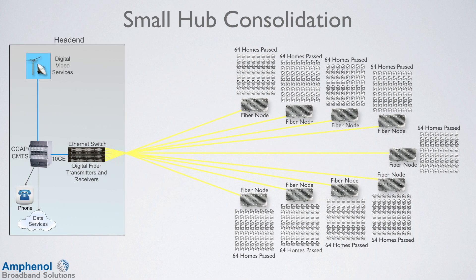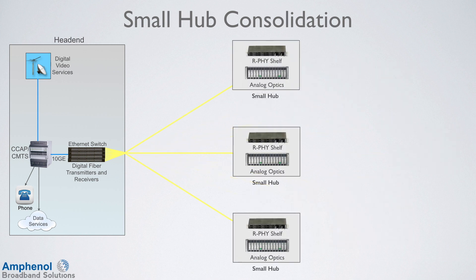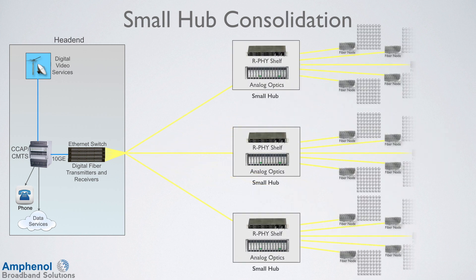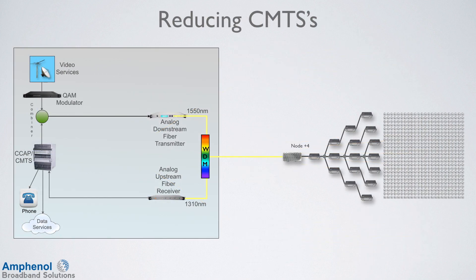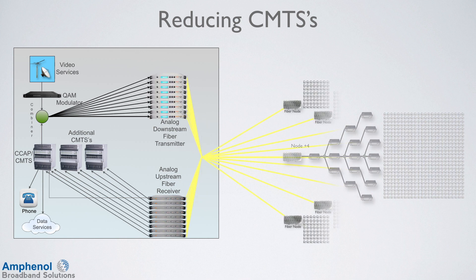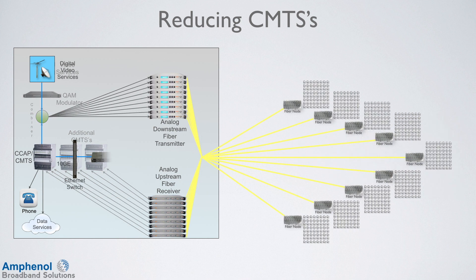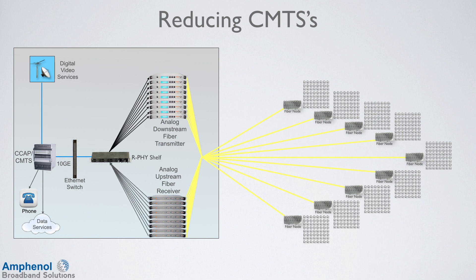Remote PHY can also be used to consolidate small hubs by installing a remote PHY shelf at the hub location, which feeds the hub's existing analog optics. Additionally, Remote PHY can reduce the number of CMTSs when doing node splits — instead of adding additional CMTSs, remote PHY shelves can be used in the main head-end. The existing CMTS RF line cards are replaced with digital line cards, which feed the 10GE digital signal via the Ethernet switch, so instead of buying more CMTSs, you're buying the less expensive remote PHY shelves.